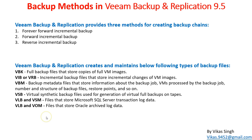Veeam Backup and Replication creates and maintains the following file types during backup jobs. The first is VBK, which stands for virtual machine full backup — it takes a complete backup of the virtual machine. The second is VIB or VRB, which are incremental backup files that store incremental changes for a VM. VIB is for forward incremental backups and VRB is for reverse incremental backups.